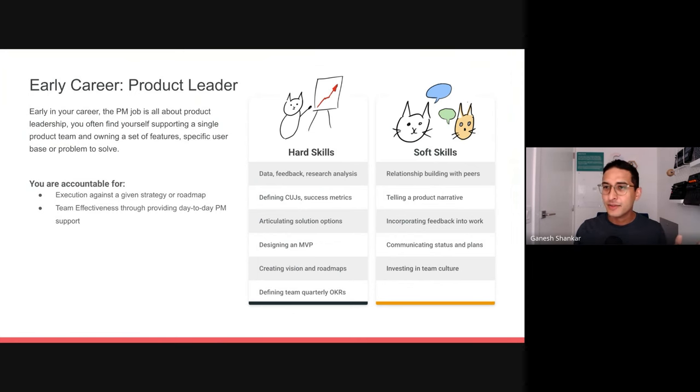Let's talk about the skills you need at this stage. I'll split these between hard and soft skills, but they're very complementary. On the hard skills side, you want to be able to analyze data, user feedback, research, and provide some perspectives. You want to define critical user journeys, success metrics. You need to be able to articulate more than one option for solutions to problems. Designing MVPs is really important. You need to create visions and roadmaps that you can share. And then you're going to be defining goals for a team, typically in the form of things like quarterly OKRs, so kind of short term.